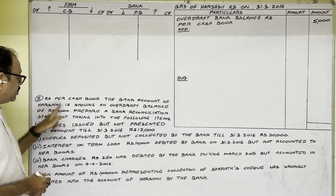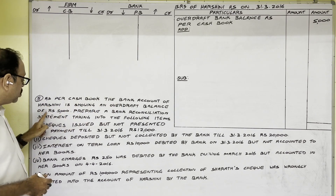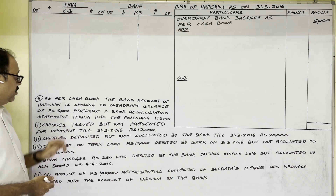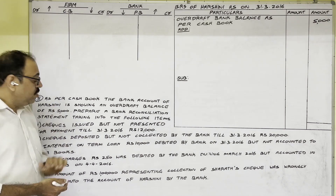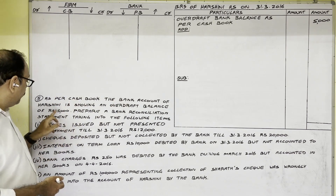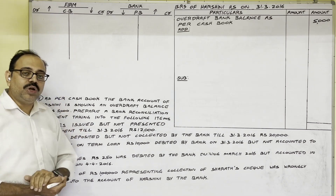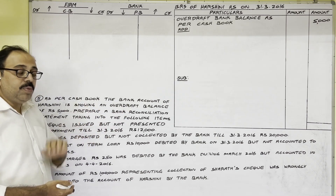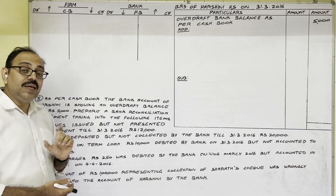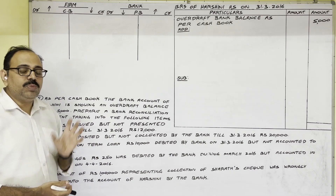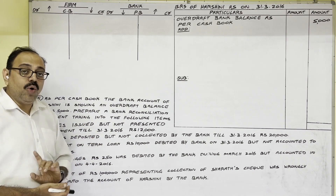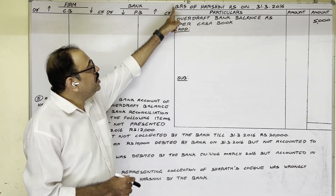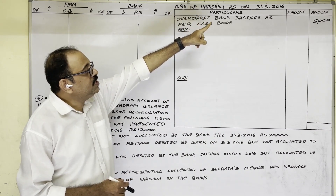Let us see the question. As per the cash book, the bank account of Harshini is showing an overdraft balance of 5000 rupees. Prepare a bank reconciliation statement taking into account the following items. The firm's owner's name is Harshini. In her cash book, bank balance is 5000 rupees. Bank balance is of two types: favorable bank balance and overdraft bank balance. This is an overdraft bank balance. The heading is: Bank Reconciliation Statement of Harshini as on 31st March 2016.